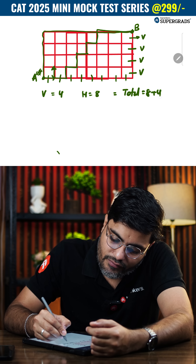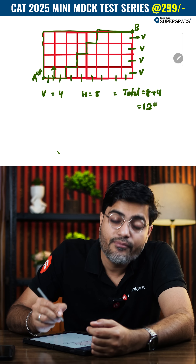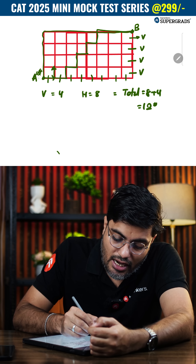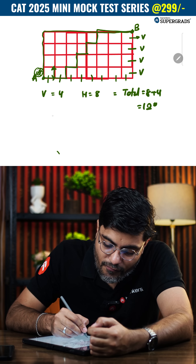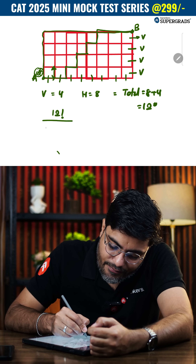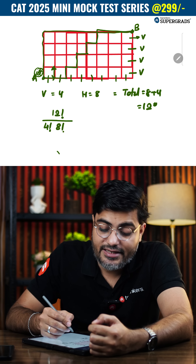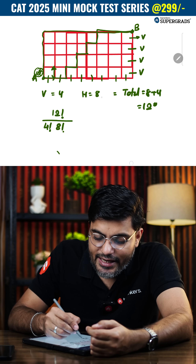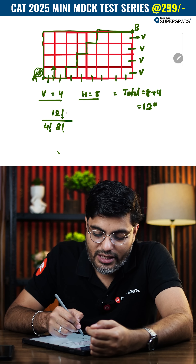Add them up: eight plus four equals twelve. The number of ways in which a fly or insect can reach from A to B will be twelve factorial divided by four factorial and eight factorial.